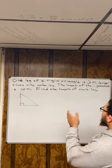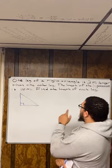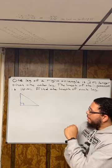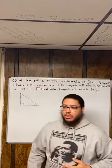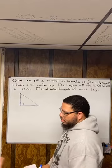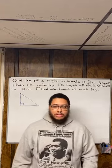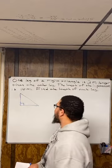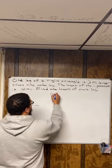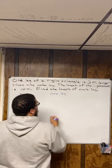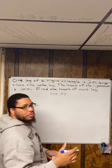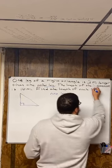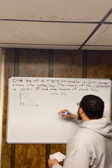Then you go back to the question and say, okay, what information am I given about this right triangle? One leg of a right triangle is two meters longer than the other leg. The length of the hypotenuse is 10. So what we also want to do is label and write down information about the values of the sides of the triangle. You might want to underline things. So you have one leg, and it's two meters longer than the other leg, and then you have a hypotenuse. So these are the three sides: one leg, the other leg, and the hypotenuse.